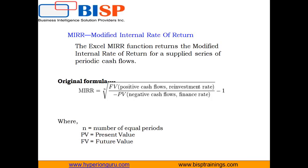MIRR takes a set of values including the initial investment and a series of net income values. The original MIRR formula is: N-th root of (FV of positive cash flows at reinvestment rate divided by PV of negative cash flows at finance rate) minus 1, where N is the number of equal periods. PV is the present value at the beginning and FV is the future value at the end. The formula discounts negative cash flows to time zero, compounds positive cash flows at the reinvestment rate, then determines the rate that equates both.